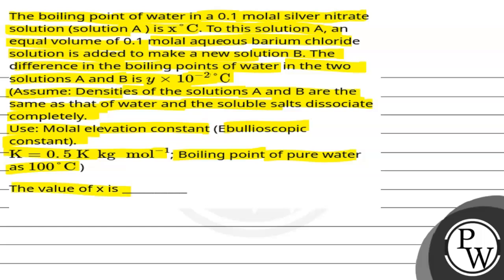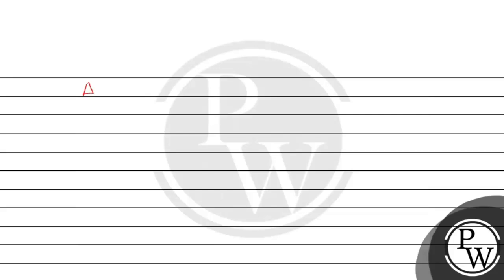The value of x is... So the key concept is elevation in boiling point. Elevation in boiling point is given by delta Tb is equal to i multiply by kb multiply by m, where i is the van't Hoff factor, kb is the molal elevation constant, and m is the molality.